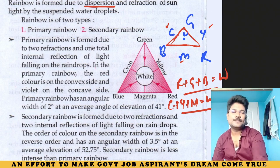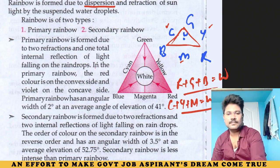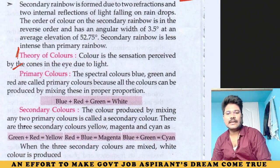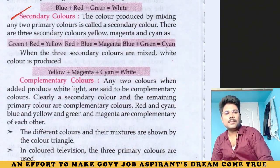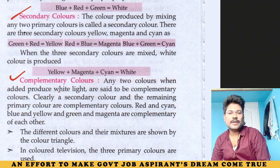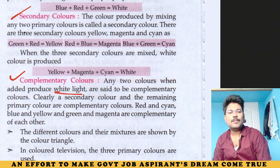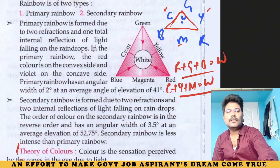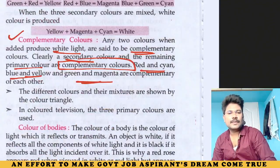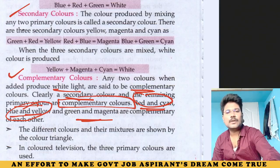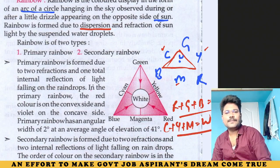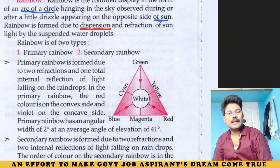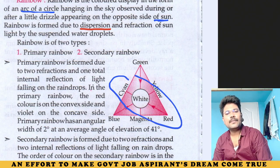This is the theory of colors — primary, secondary, and complementary colors. Any two colors when added to produce white light are called complementary colors. Secondary and primary colors are complementary pairs. Blue and yellow, green and magenta, red and cyan are complementary color pairs.